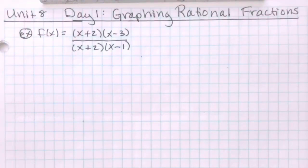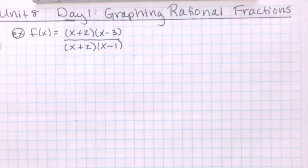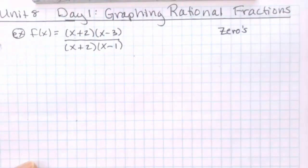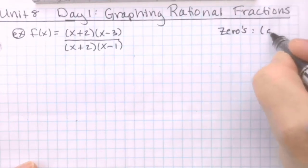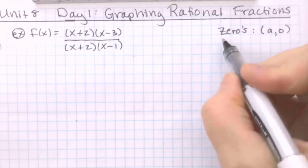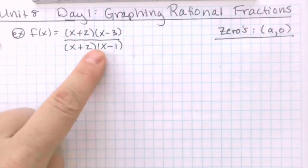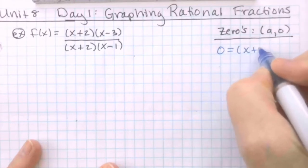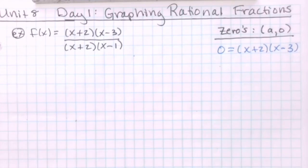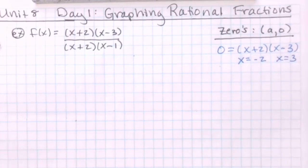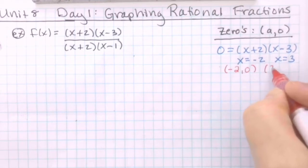We're going to be finding a number of things, also using the grapher. First, we're going to get the zeros. The zeros of a function are some number a comma 0, where y equals 0. So when you're finding the zeros, you set y equal to 0 and solve for x. The bottom multiplies out, so you have 0 equals x plus 2 times x minus 3 — the top equal to 0. It's already factored, so x is negative 2 and x is positive 3. My zeros are negative 2 comma 0 and 3 comma 0.